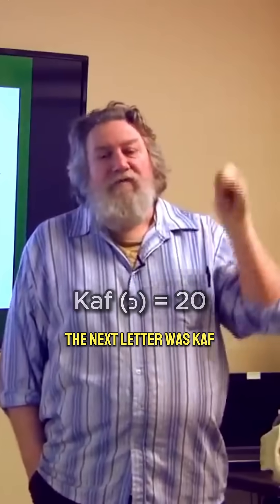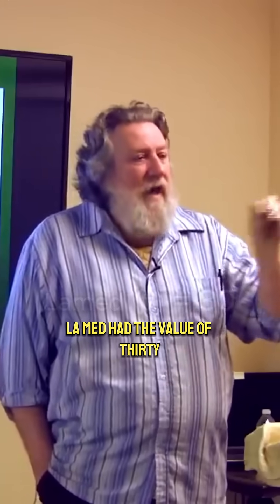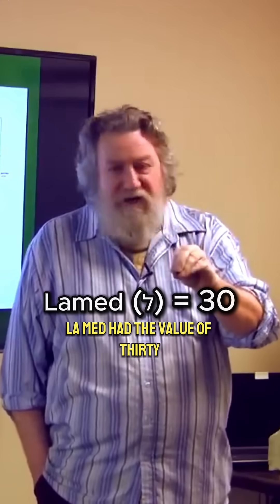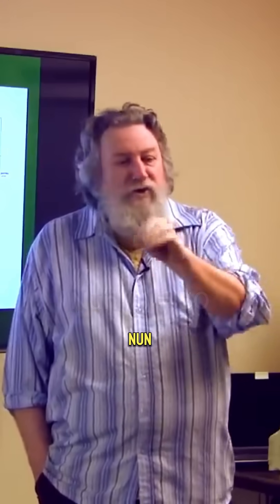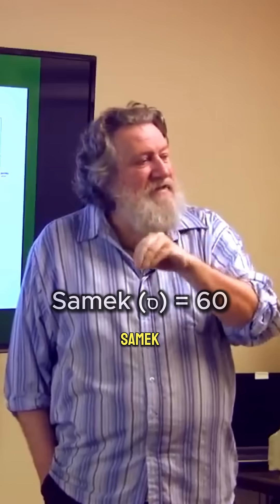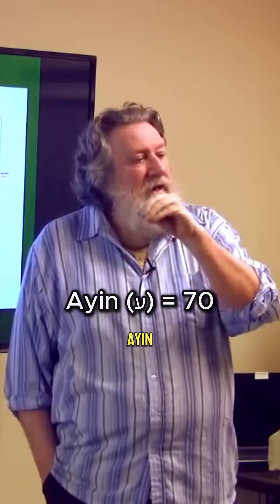The next letter was Kof, which had the value of twenty. Lamed had the value of thirty. Mem, forty. Nun, fifty. Samek, sixty. Ion, seventy, etc.